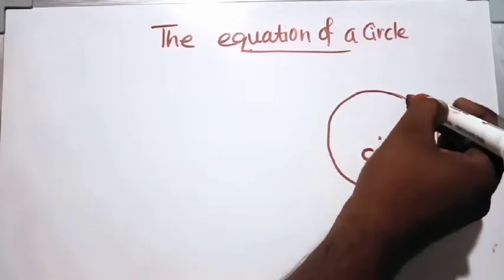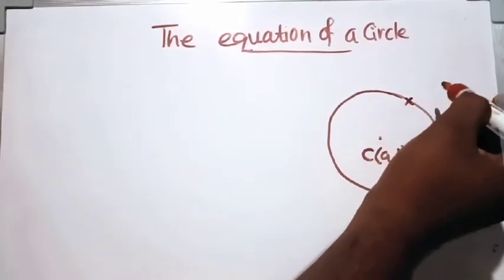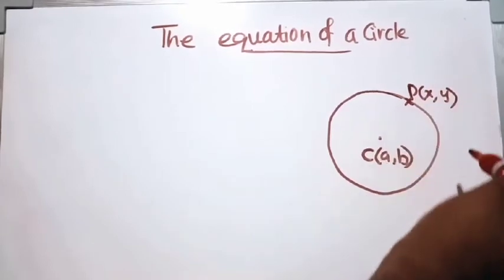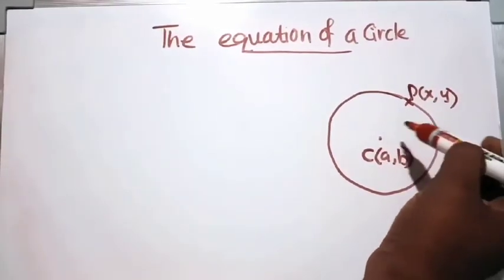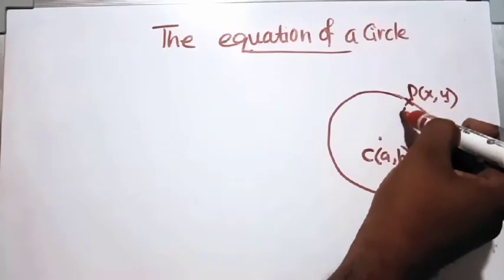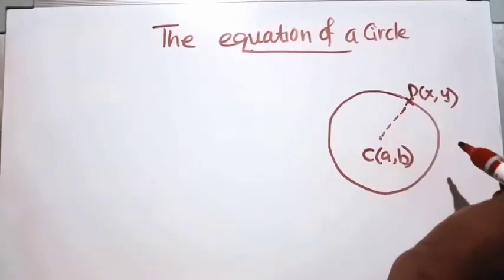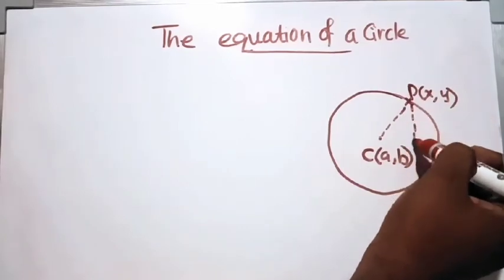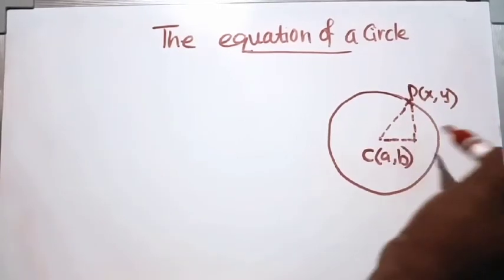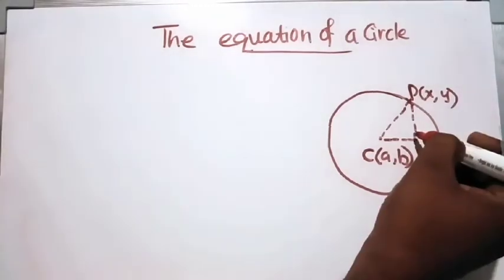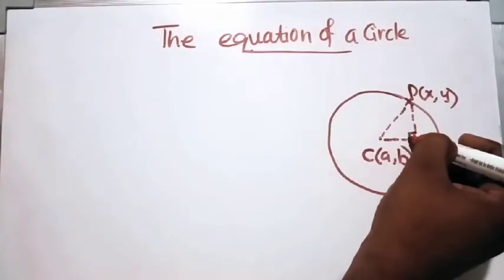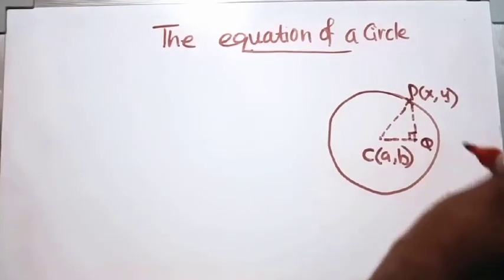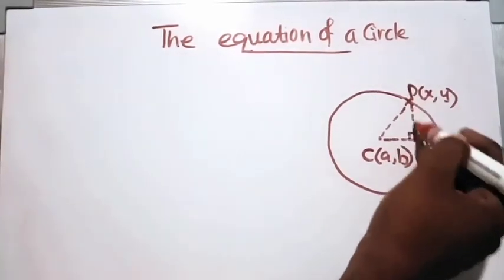Now let's take a point on the circle which is P(x, y), so that CP is the radius of the circle. Through P, when we draw two perpendicular lines, they meet at a point Q, so that a right triangle is formed.